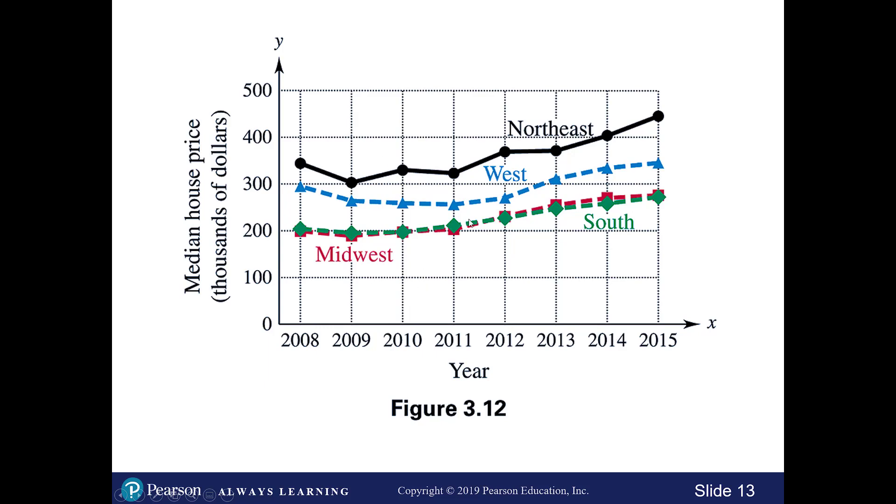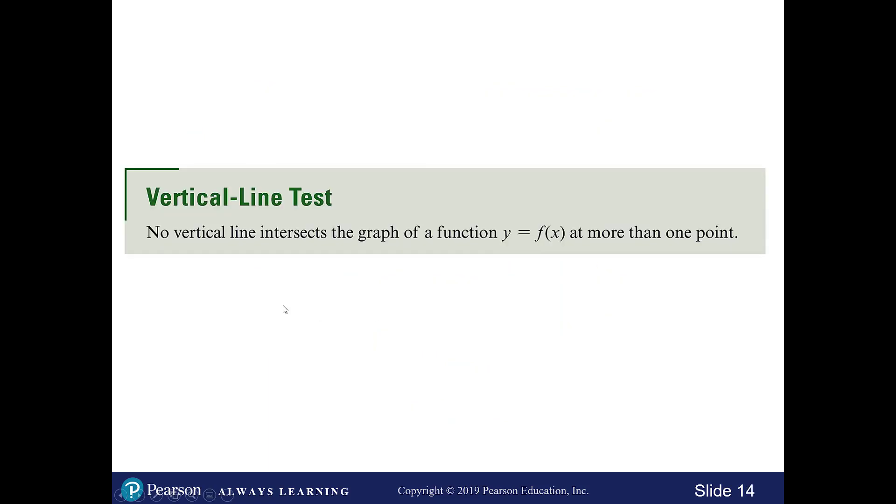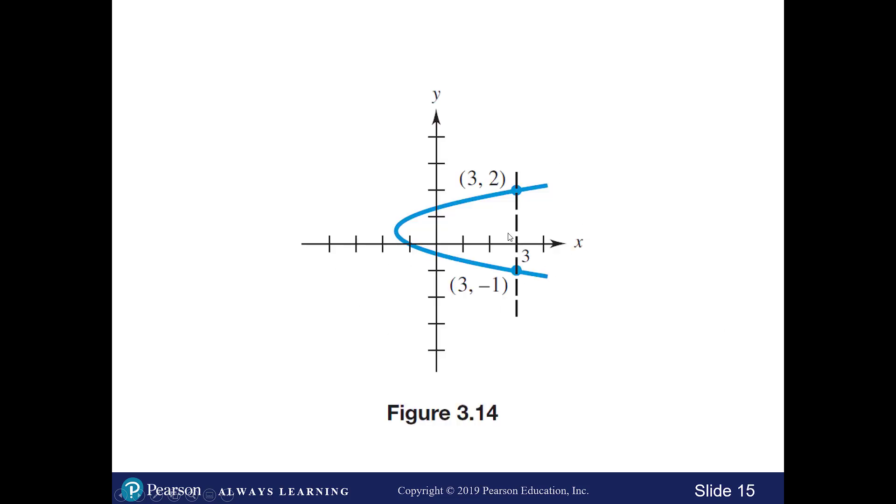How you can tell something is a function is when you put in one input, you only get one output. And there is actually something called the vertical line test. So if you put a vertical line across your function, notice when I put in 1x, in this case 3, I can actually get two different outputs. So this would be an example of not a function.